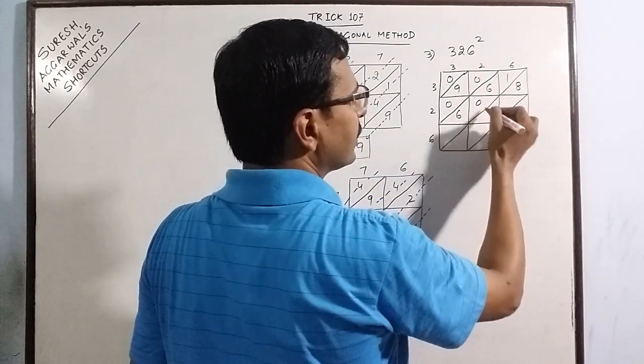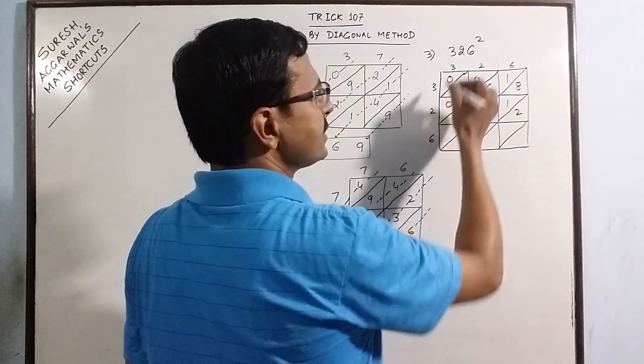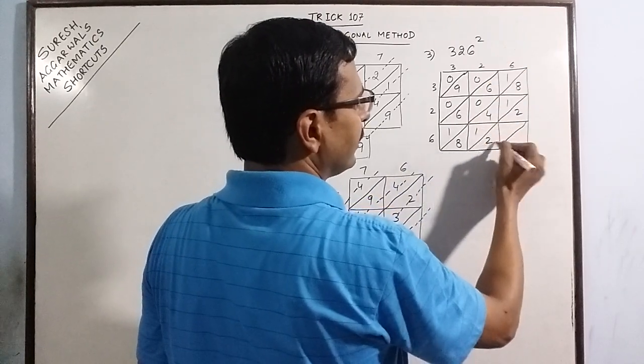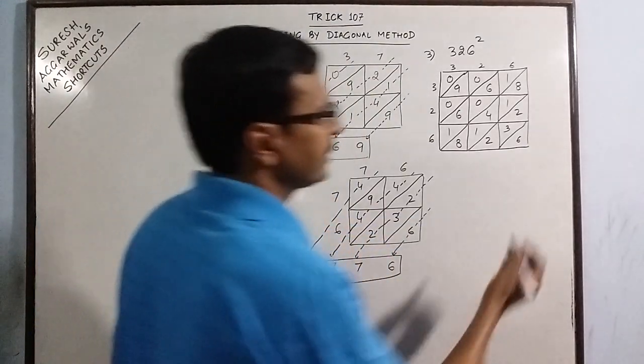2 into 2 is 4. 2 into 6 is 12. 6 into 3 is 18. 6 into 2 is 12. And 6 into 6 is 36. Now start with the last number. You have 6.